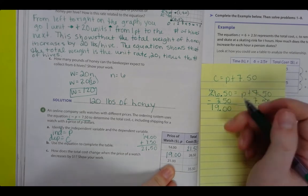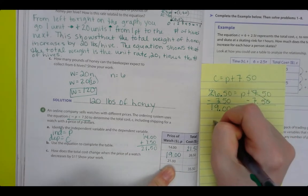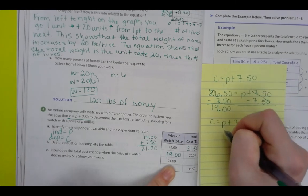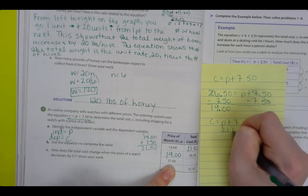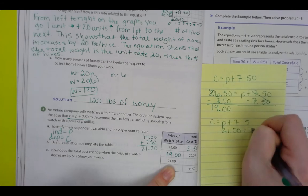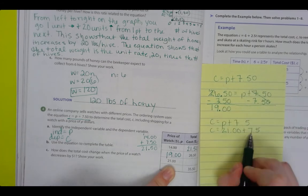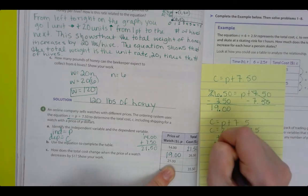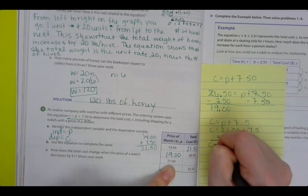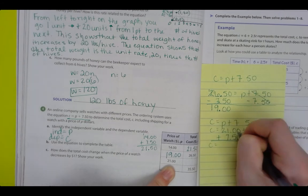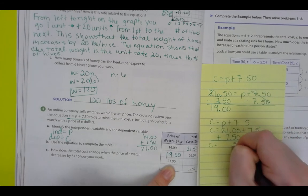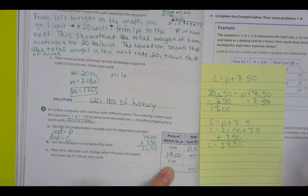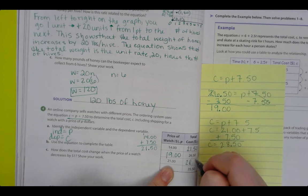All right, next we have $21. So C equals P plus $7.50 and we know P is $21 plus $7.50. I'm going to add it. Line up those decimals. 0 plus 0 is 0, 0 plus 5 is 5, bring down the decimal, 1 plus 7 is 8, and 2 plus nothing is 2. So you get $28.50.